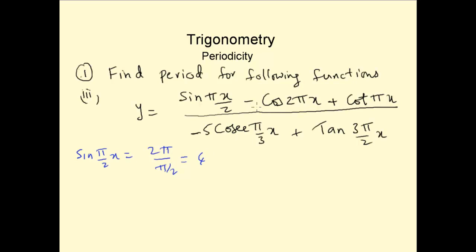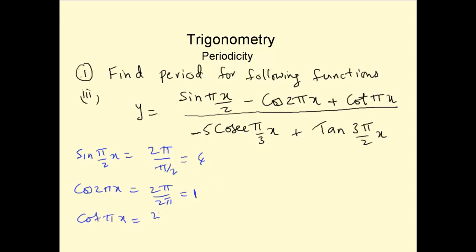The minus sign doesn't matter. For cos(2πx), the period is 2π/n = 2π/2π = 1. For cot(πx), the period is π/n = π/π = 1. For -5csc(πx/3), the -5 is the amplitude, so we ignore it. The period for csc(πx/3) is 2π/(π/3) = 6.